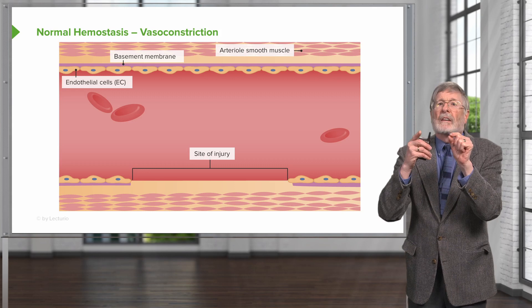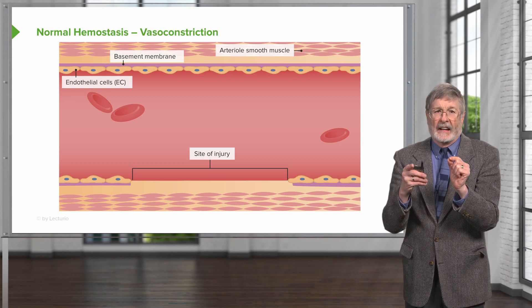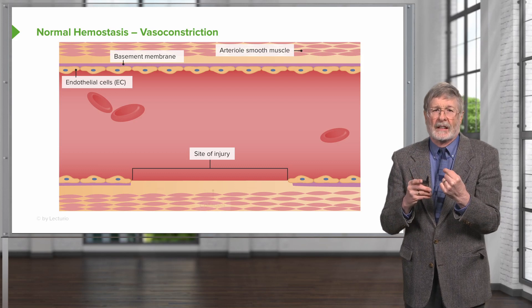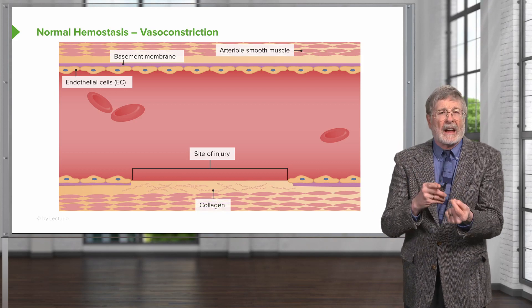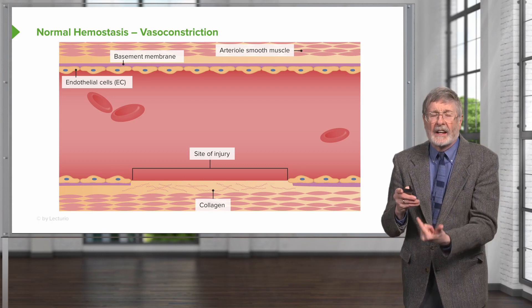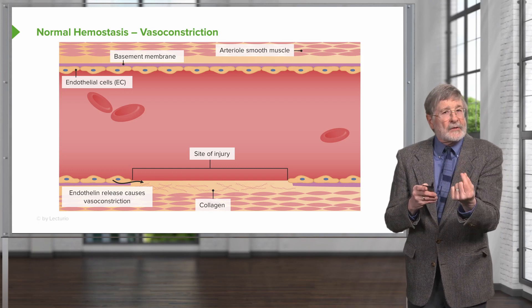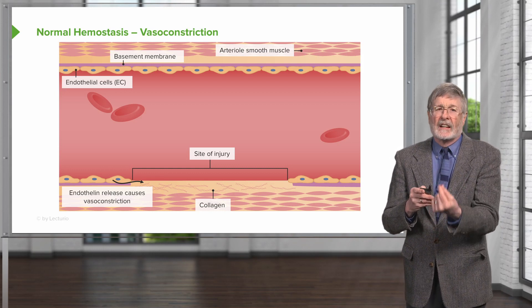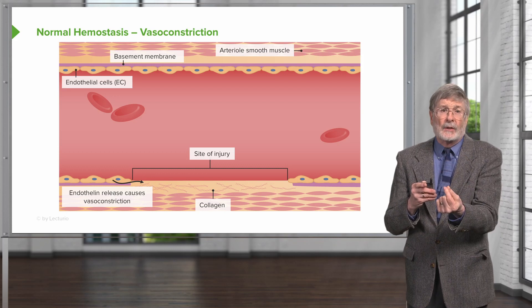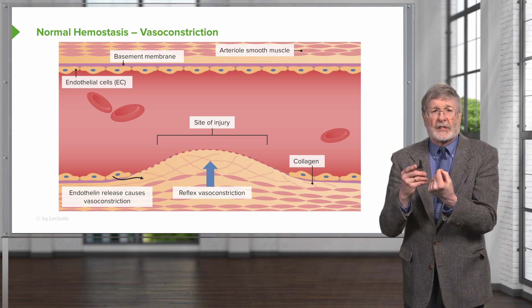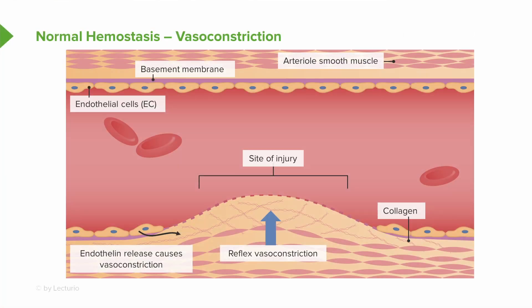Now we have a site of injury. We have lost endothelium at that site, and that's going to expose the underlying basement membrane and extracellular matrix. The collagen down there is going to be one of the major drivers that will incite the formation of a thrombus. Endothelial cells are also part of this process — they're going to release a number of factors, including endothelin, that will cause vasoconstriction. This is going to limit flow through the area of injury, but it's not going to be enough to completely stop the bleeding.